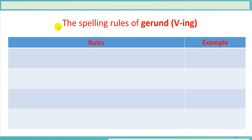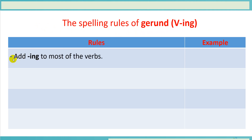Now we study the spelling rules of gerunds or verb plus -ing. Rule number one: we add -ing to most verbs. For example, the verb watch — the gerund is watching.